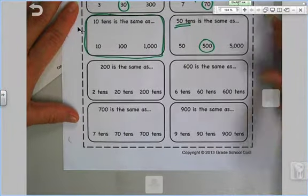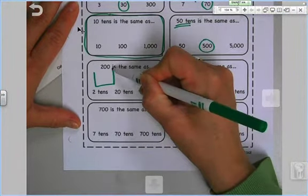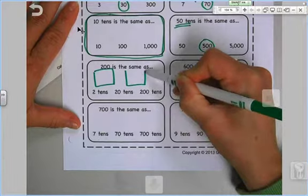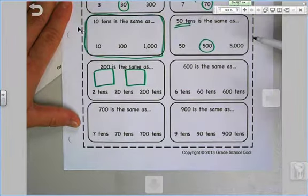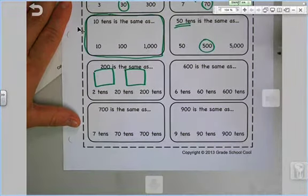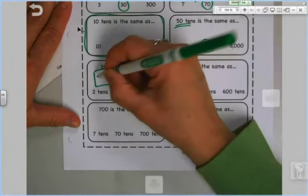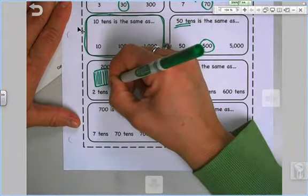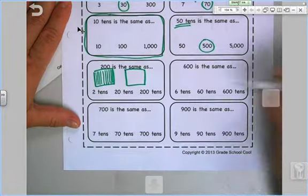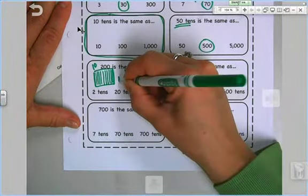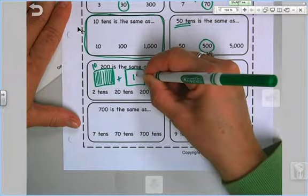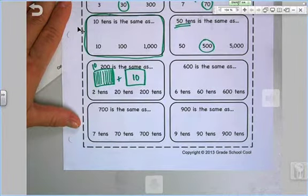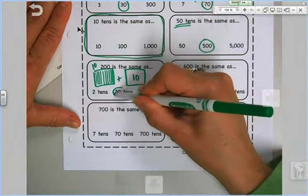Now, what if I have 200? Everybody draw me two hundreds flats. There's two hundreds flats. And we said there's how many tens in each one? There's one, two, three, four, five, six, seven, eight, nine, 10. So there's 10 in this one. There must be how many in this one? 10. You got it. And 10 plus 10 is 20 tens.